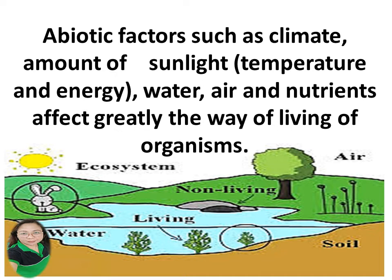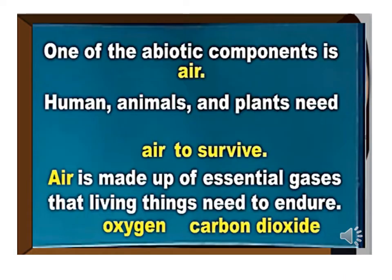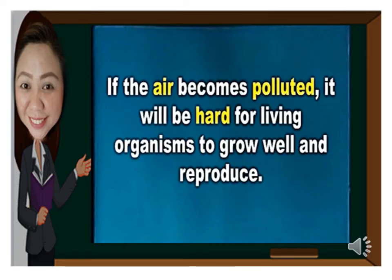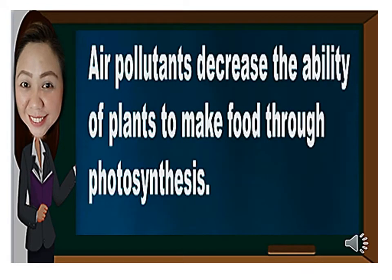Let's talk about the effects of air. One of the abiotic components is air. Humans, animals, and plants need air to survive. Air is made up of essential gases that living things need to endure. If the air becomes polluted, it will be hard for living organisms to grow well and reproduce. Exposure to polluted air will cause coughing, asthma, and diseases of the lungs among humans and animals. Air pollutants also decrease the ability of plants to make food through photosynthesis.